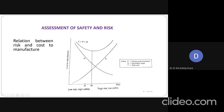Likewise, when risk is high and low safety measures are incorporated, the company has to spend a lot on secondary costs — meeting warranty issues, retaining customer goodwill, and insurance. Total cost equals primary cost plus secondary cost. This total cost curve is found to be minimum at point M, where primary and secondary costs are equal in magnitude but opposite in direction. This is how we can make an assessment of safety and risk.